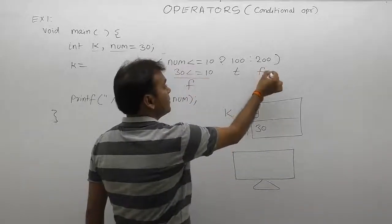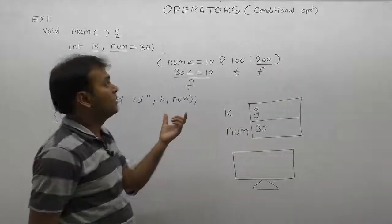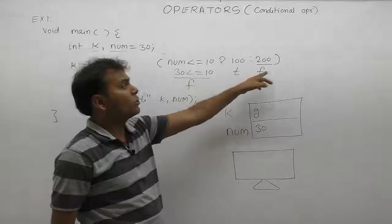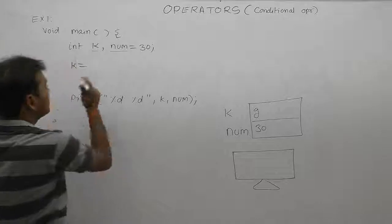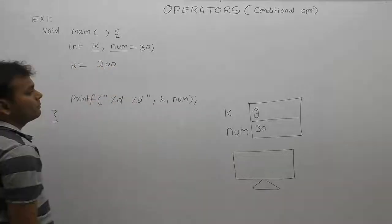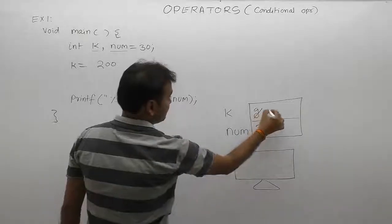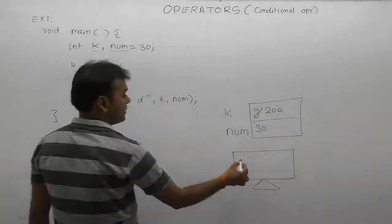This is true part, this is false part. The false part is 200. The final result in that case is written by the false expression. The overall result is 200, which is assigned to the variable k. Now the displayed value of k is 200 and num is 30.